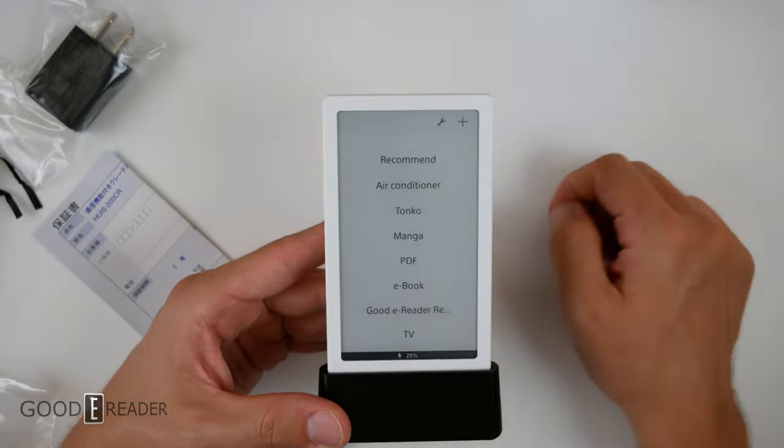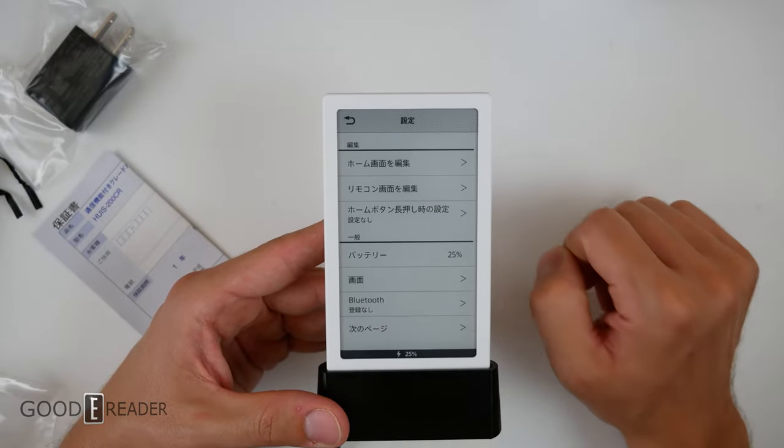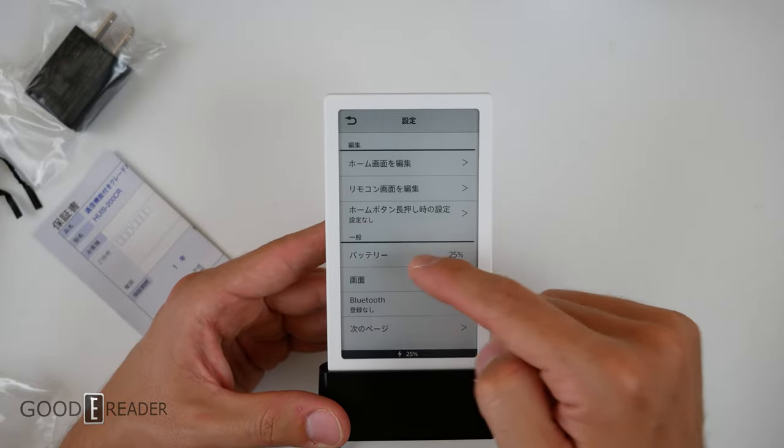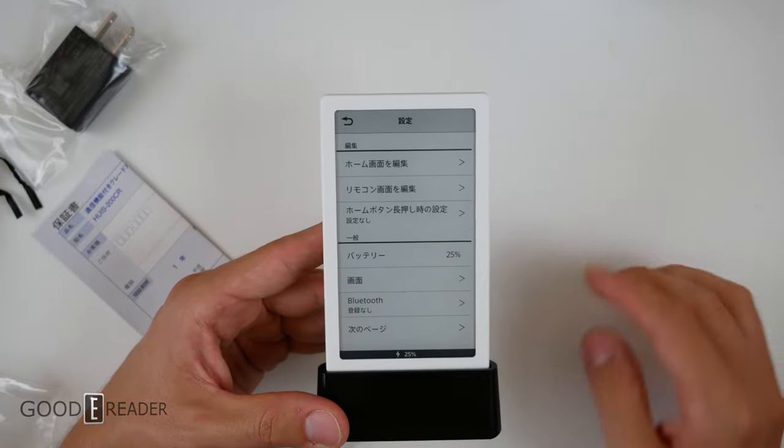However, when it comes to the menu, everything is in Japanese. But that doesn't hold you back too much, because it's really just a few things you have to remember, like battery, screen and Bluetooth.